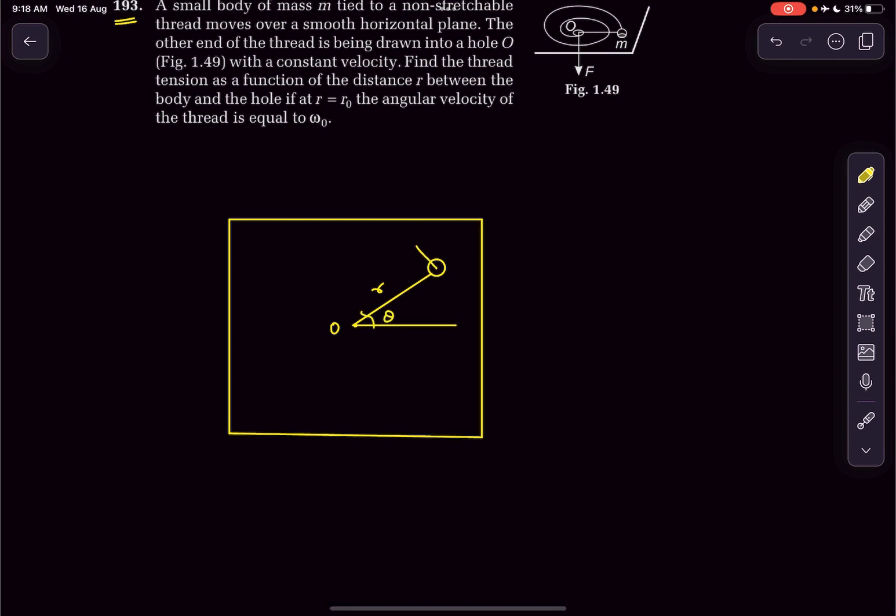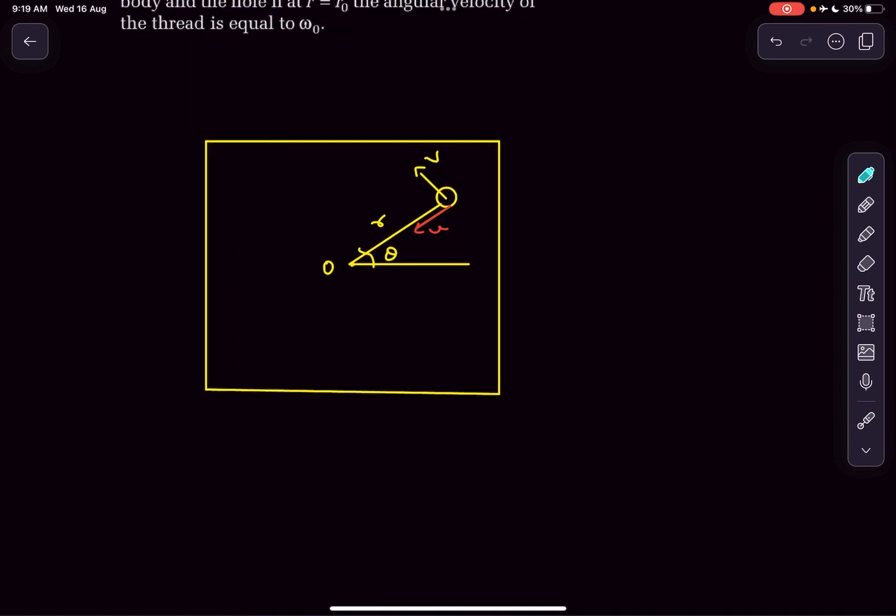It has some velocity v perpendicular to the radial line and also some velocity along the radial line, u. As given in the problem, it's being pulled at constant velocity, so u is constant.